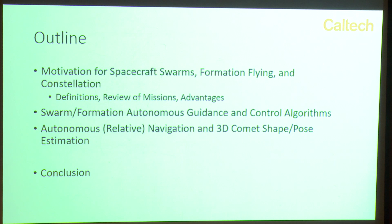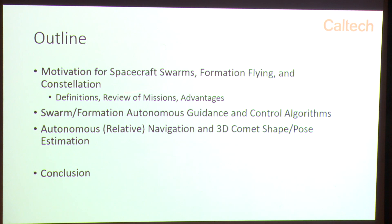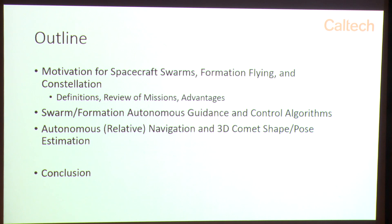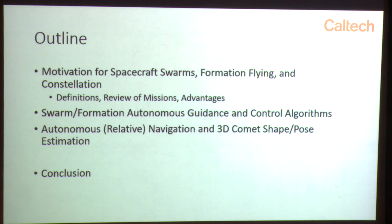We're going to talk about swarm and multi-spacecraft-based navigation. But I'll start with the motivation for why we want multiple, maybe small spacecraft. Christina gave an excellent overview of cubesats and small satellites, and I'll extend that to multiple systems. I'll cover definitions — in particular, the difference between constellations and formation flying — then focus on guidance and control algorithms that enable swarm formation flying, and briefly cover navigation and shape estimation using onboard cameras without prior information.